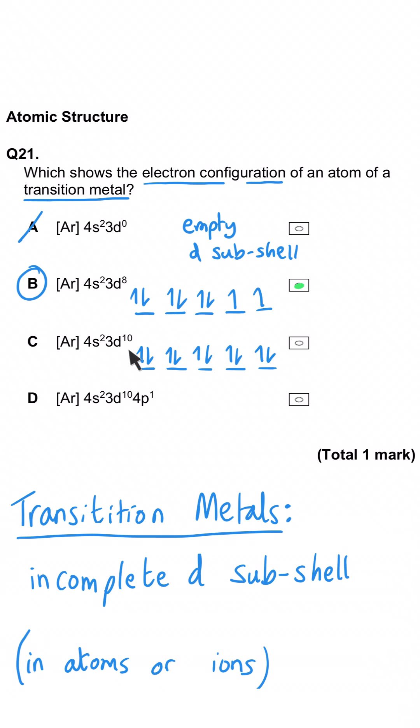Whereas C has got ten which means it's full, D has got ten and in fact we've moved on to the P subshell, so that's definitely full. In a test of course you'd stop at option B once you've found the right answer and you'd save time for some of the later questions.